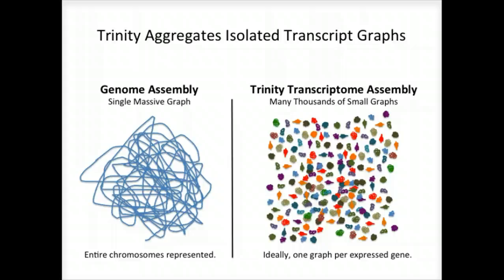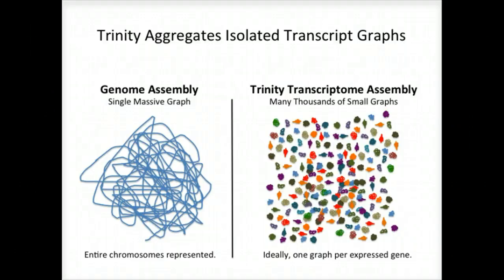A significant difference between Trinity, as compared to all other assemblers, is how it goes about building the graphs. Genome assemblers, and other transcriptome assemblers that are built on top of genome assemblers, typically build single large graphs. Trinity, instead, tries to partition the data into many thousands of small graphs, ideally one graph per expressed gene. This is possible because most expressed transcripts tend to be non-overlapping. Having many small graphs lends itself to massive parallel processing, which is an added computational benefit.